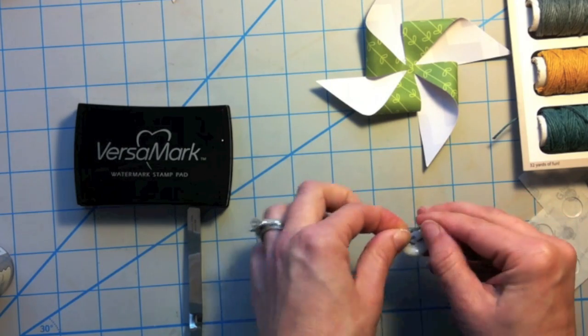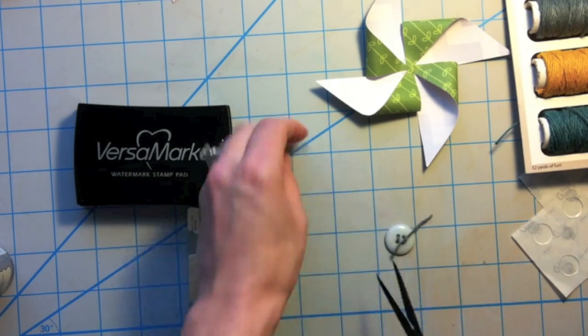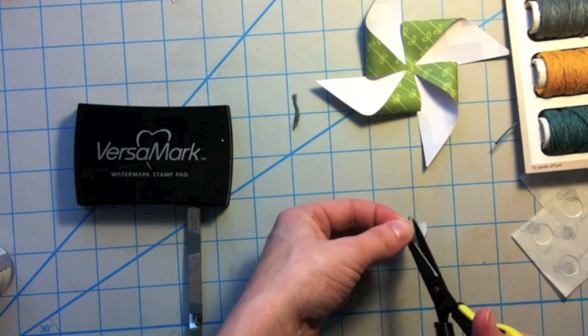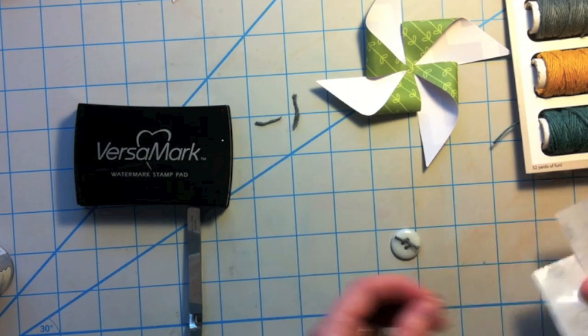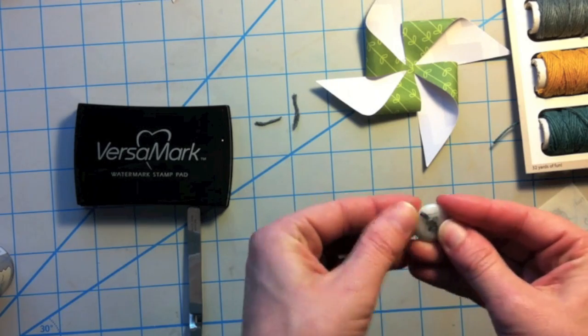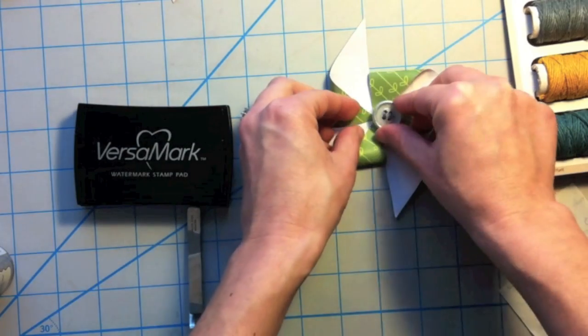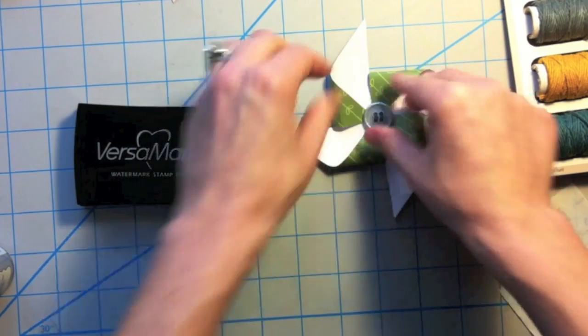Tie it in a knot. Cut off the excess pieces. Then I'm going to grab one more glue dot and I'm going to put it on the back of the button. That's going to keep that hemp in place. And then I'm just going to put it right onto my pinwheel. And that button is secure. It's not going anywhere.